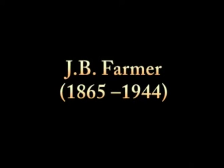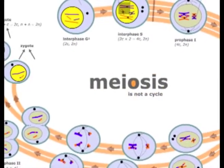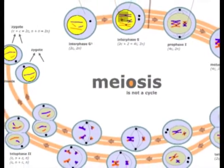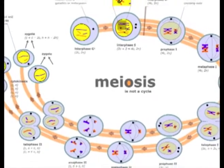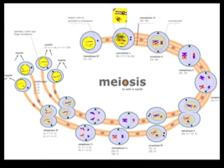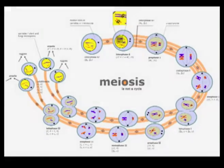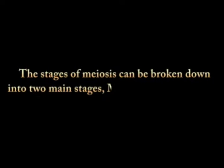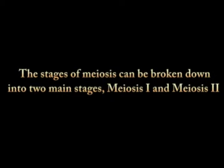The term meiosis was coined by J.B. Farmer in 1905. It is a specialized form of cell division in which the number of chromosomes is reduced to half. The stages of meiosis can be broken down into two main stages: Meiosis 1 and Meiosis 2.